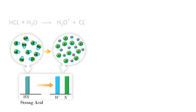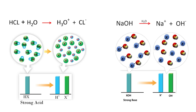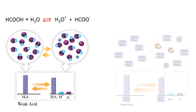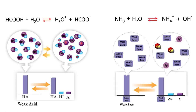As we learned in the General Properties of Acids and Bases videos, strong acids or bases are completely ionized, so the equation is written with a one-way arrow — the reaction proceeds in one direction. While weak acids or bases are partially ionized, the equation is written with opposite arrows, which means the reaction occurs in both directions.